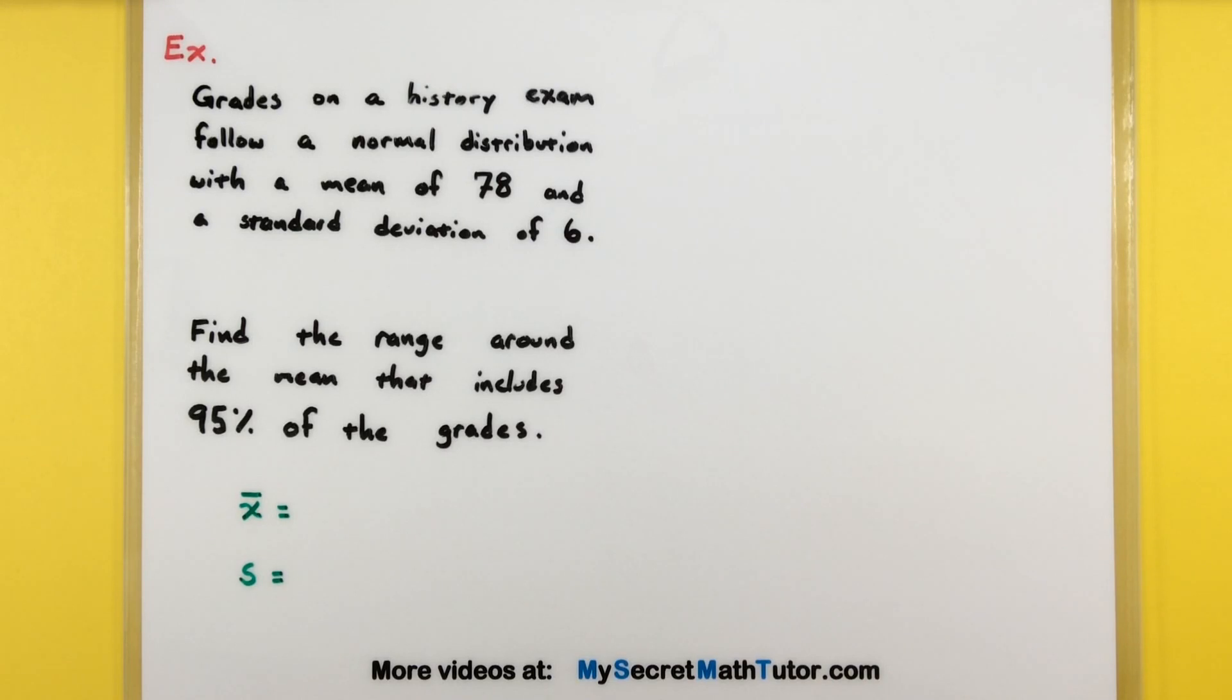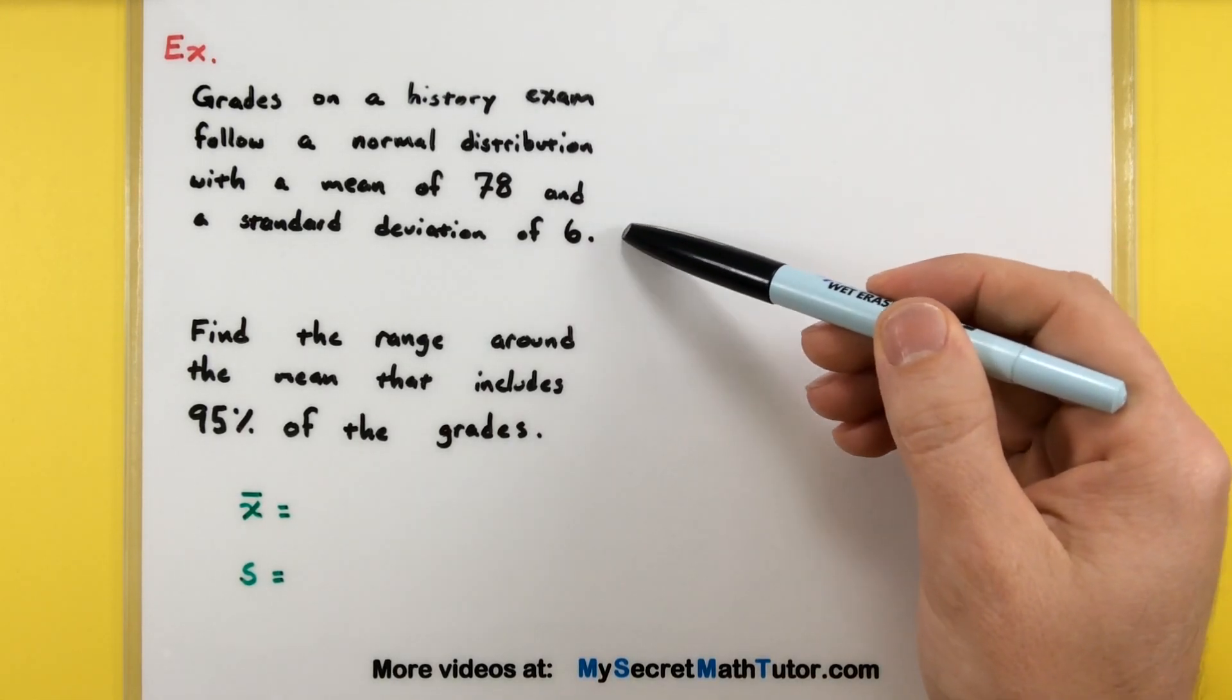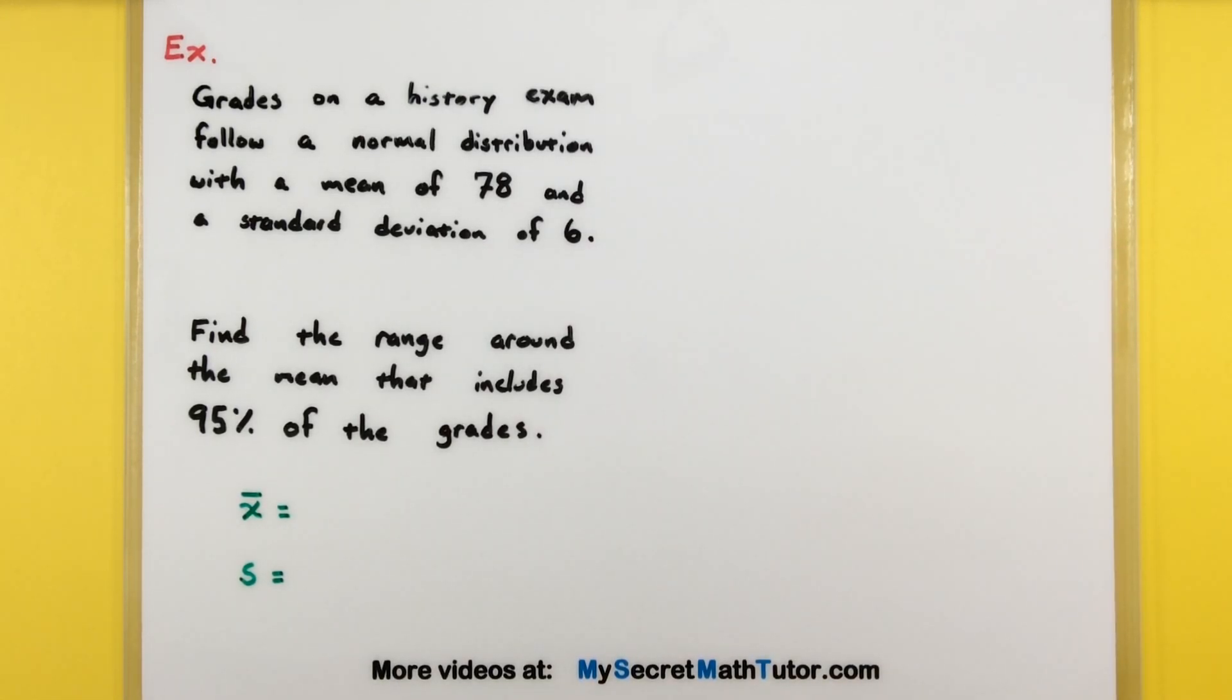For the first example, we're going to look at grades for a history exam, and we're given that they follow a normal distribution. That's important because this empirical rule works for normal distributions. We have a mean of 78 and a standard deviation of 6.